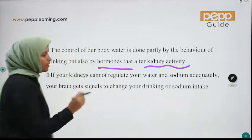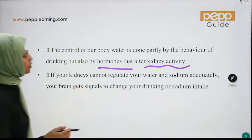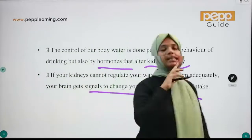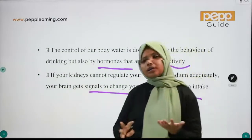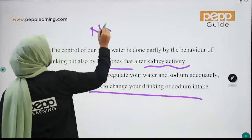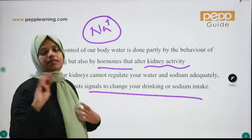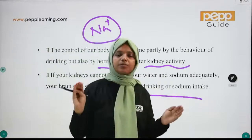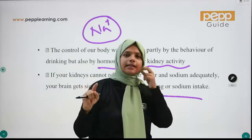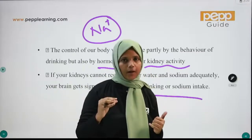If your kidneys cannot regulate your water and sodium adequately, your brain gets a signal to change your drinking or sodium intake. Our body has water and sodium. Sodium means Na+. Ions include Na+ and K+. This relates to conductivity and impulse transmission.